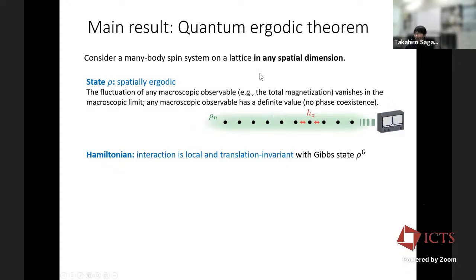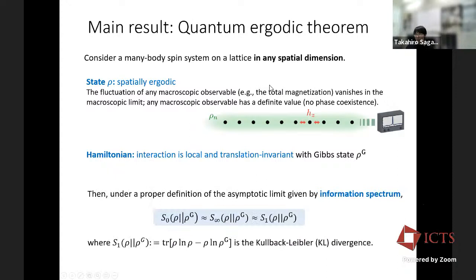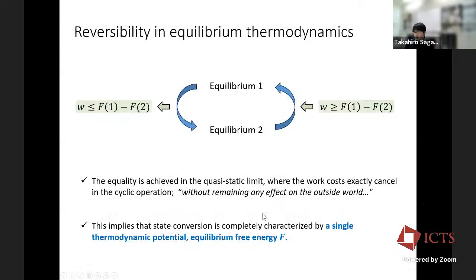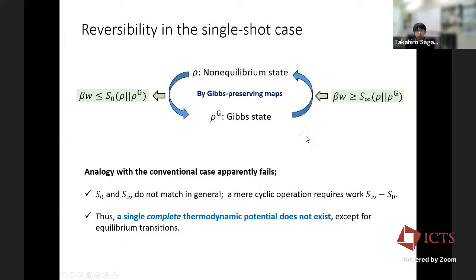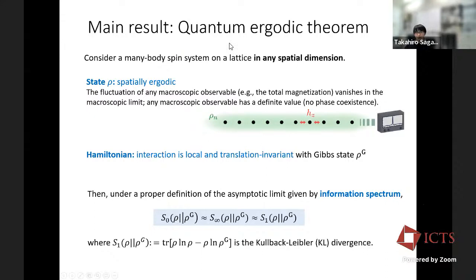We also assume the Hamiltonians are local, translation-invariant, and have a Gibbs state — no disorder, only local interactions. Importantly, in our theory the spatial dimension can be arbitrary, not restricted to one or two dimensions. What we proved mathematically is that under the proper asymptotic limit of entropies — called the information spectrum — and under these assumptions, both the Rényi zero entropy and Rényi infinity entropy equal the KL divergence rate. So we can recover a single thermodynamic potential.